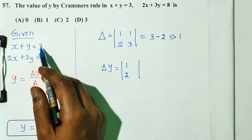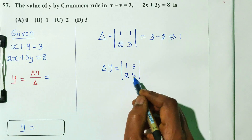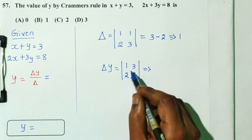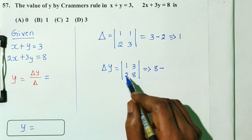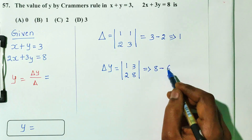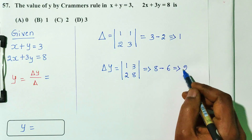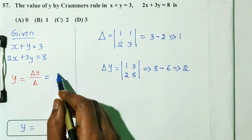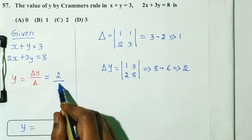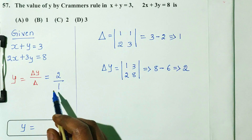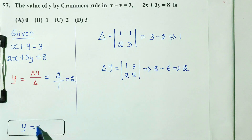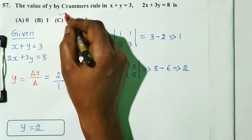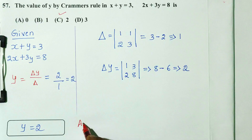For delta y, we replace the y-column with the constants: 1, 3 from the right-hand side. So the determinant of: 1, 3, 2, 8 — which gives 8 into 1 minus 3 into 2, so 8 minus 6 equals 2. Therefore delta y equals 2, and y equals delta y by delta equals 2 by 1, which is 2. Option C is the right answer.